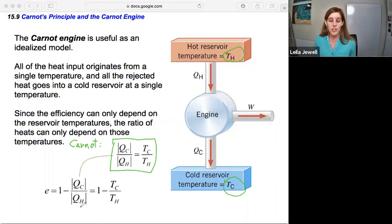The first efficiency equation here is for all engines, but this one minus Tc over Th, this is the maximum efficiency that a heat engine can have. So anytime the problem asks for either a Carnot engine or for a maximum efficiency, the idealized case, you know you can use this equation.